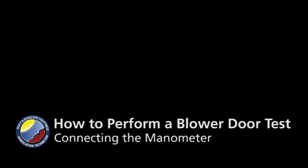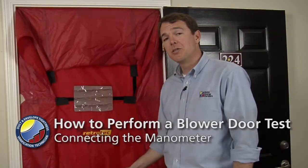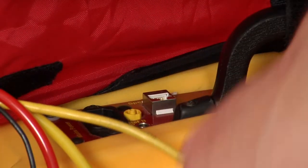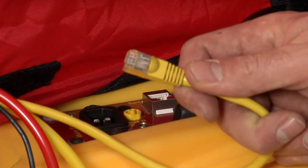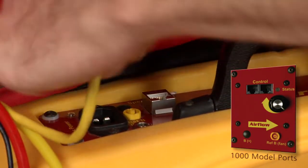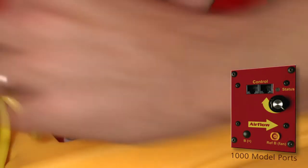In this section, I'm going to show you how to hook up the power and pressure tubing from the fan to the DM2 manometer. This is the Cat5 cable. It allows us to control the speed of the fan. That plugs in there.